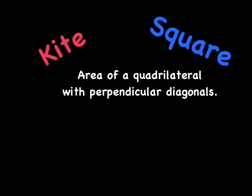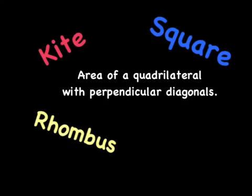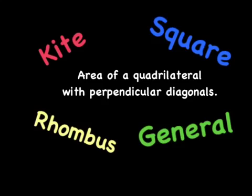A square is another example. A square is a special type of kite. A rhombus was the third example. A rhombus is a special type of kite as well. And we also talked a little bit about a general quadrilateral with perpendicular diagonals.